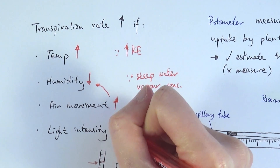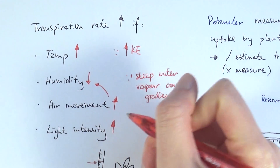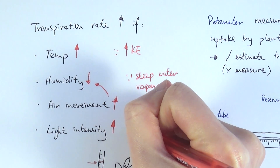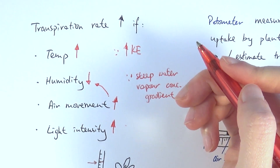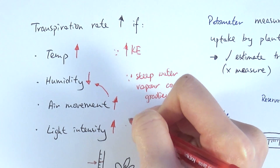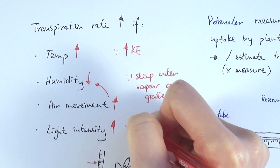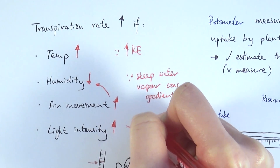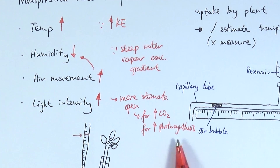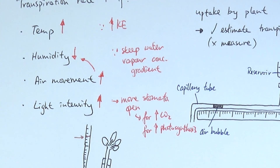The last factor is light intensity. If light intensity is high, transpiration rate also increases. Remember, transpiration is a side effect of photosynthesis — if light intensity increases, more stomata will open to allow more carbon dioxide in for photosynthesis, which also increases water vapor loss. So those are the four factors that affect transpiration rate.